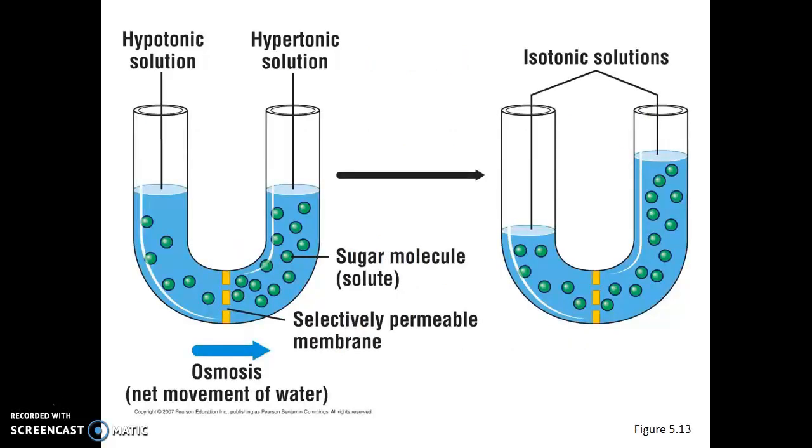Here we have a theoretical experiment where we have a U-shaped test tube that has two different sugar solutions. Now these two sugar solutions, they have different concentrations. One side has more sugar dissolved in the water, the other side has less sugar, and down at the very bottom of the horseshoe there is a selectively permeable membrane.